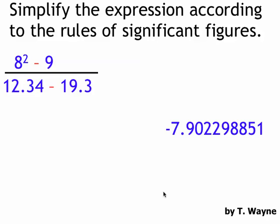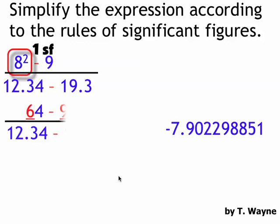So the 8 squared, that's like 8 times 8. That's one sig fig. So one sig fig for the 8 squared in the top. That number becomes 64. Now I'm going to put a line underneath the 6 because there's only one sig fig.